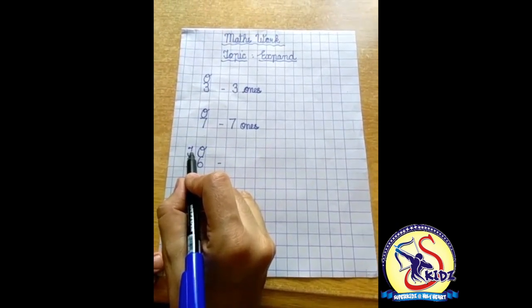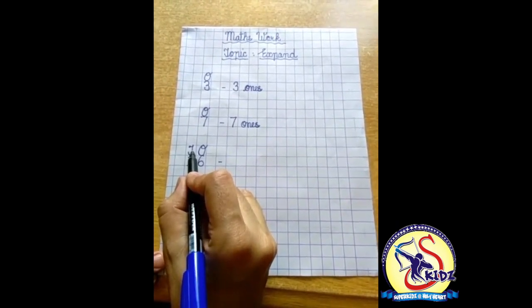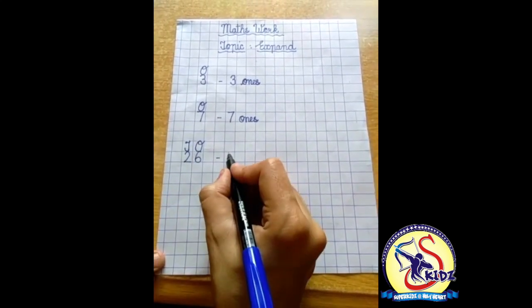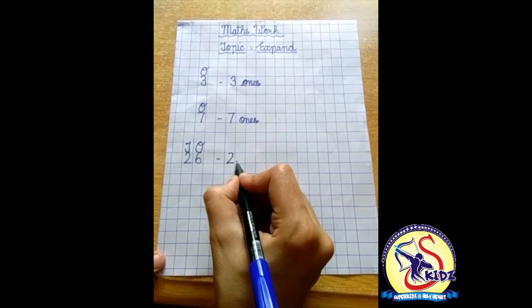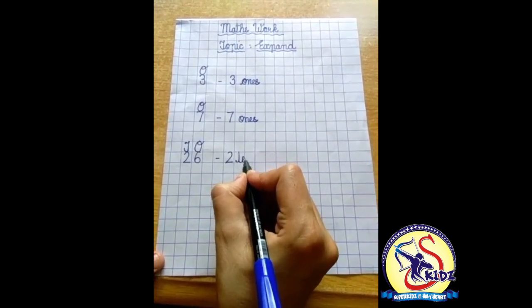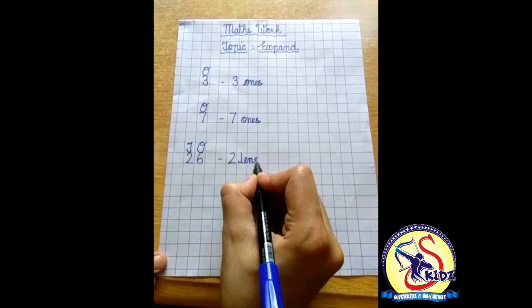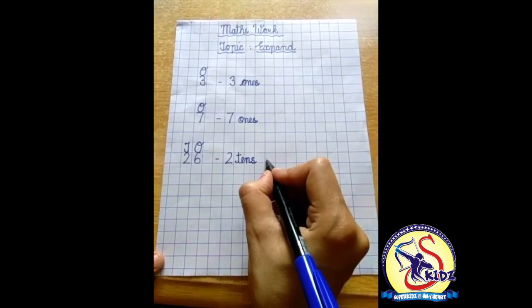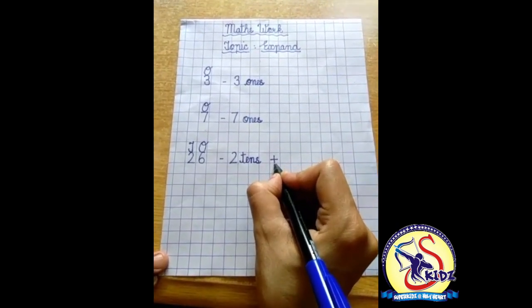So first of all we will write the number at the place of tens. And that is 2. So firstly we will write 2 tens. T E N S tens. Afterwards we will put a sign of plus.